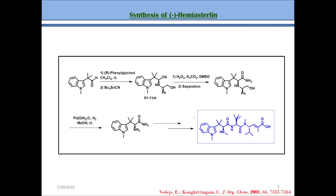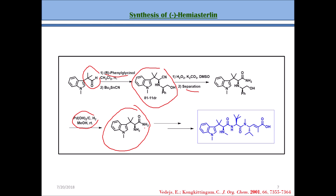To make things clearer: we start with our aldehyde and use R-phenylglycinol as the chiral auxiliary. Using that chiral auxiliary, the diastereomer is formed. Once the diastereomer is formed, we separate it using column chromatography, since diastereomers have different physical and chemical properties — unlike enantiomers. After separation, we deprotect with Pd(OH)2 on carbon under hydrogenation conditions. This removes the chiral auxiliary, and we finally get our desired pure compound.